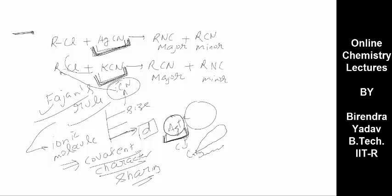I hope you understand. In KCN, because it has ionic character, CN minus is released easily and carbon attacks to give RCN as the major product. Because AgCN is not releasing CN minus easily, the nitrogen end attacks, giving RNC as the major product.